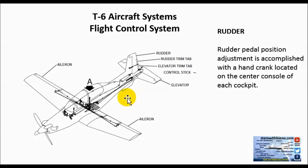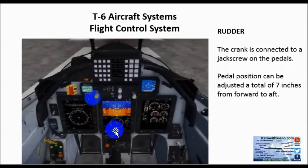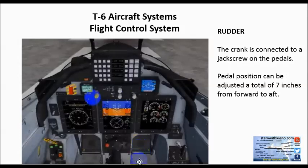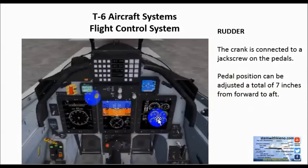Rudder pedal position adjustment is accomplished with a hand crank located on the center console of each cockpit. You can adjust the rudder pedals — if they felt really far away, you could actuate that control and bring the rudder pedals closer to you. Rudder pedal position can be adjusted a total of seven inches from forward to aft. Sometimes the pilot's legs might be a little bit shorter, so when you get into the cockpit and do your preflight, you can adjust those rudder pedals for nice rudder deflection in flight.